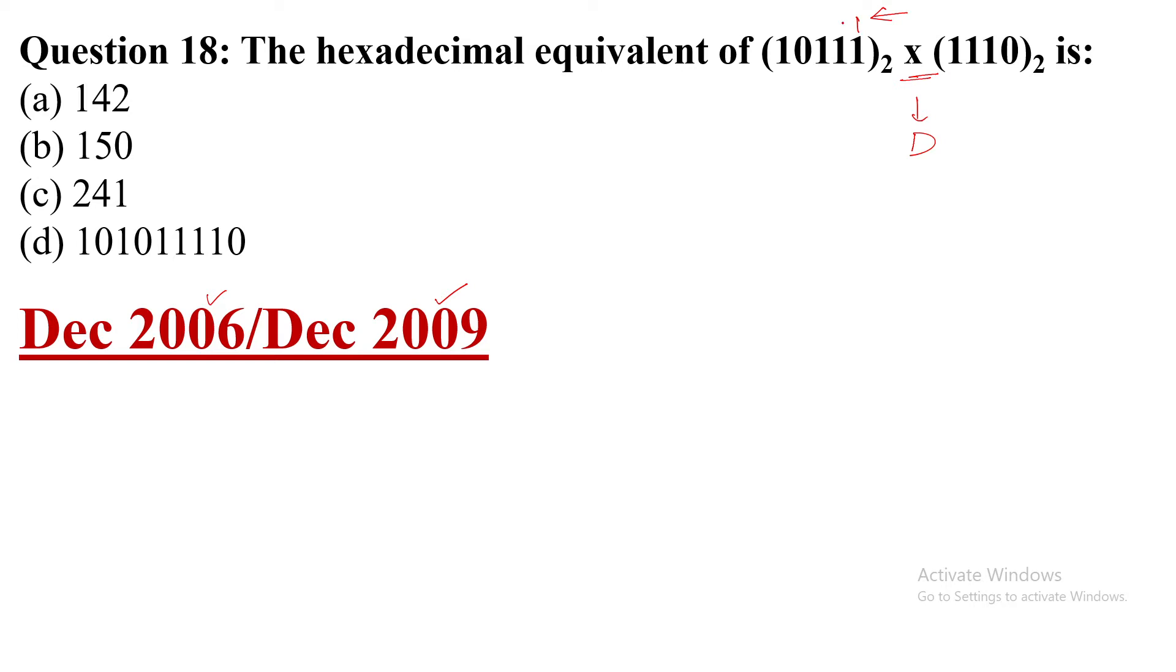2 to the power 0 is 1, 2 to the power 1 is 2, 2 to the power 2 is 4, 2 to the power 3 is 8, and 2 to the power 4 is 16. Same things here: 2 to the power 0 is 1, 2 to the power 1 is 2, 2 to the power 2 is 4, and 2 to the power 3 is 8. Now 16 plus 4 is 20, 20 plus 2 plus 1 is 23.